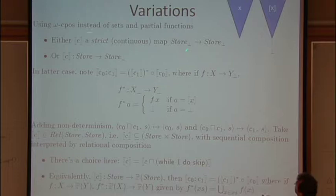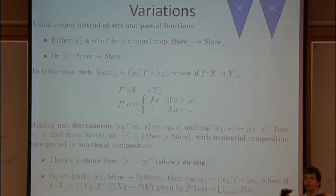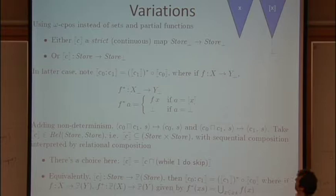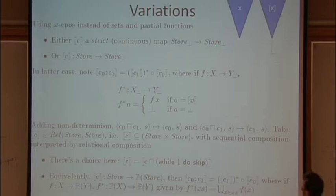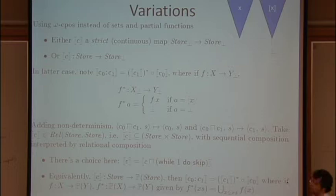So instead of using sets and partial functions, we kind of take this set store and we'll turn it into a rather trivial flat CPO which just has all the states up at the top and sticks a new bottom element underneath all of them. And then we can interpret commands as strict functions from this lifted domain of stores to this lifted domain of stores. So now this is total. The things that were undefined previously now map to this new bottom element representing non-termination.